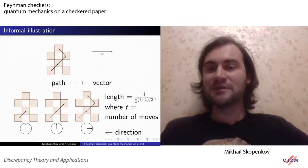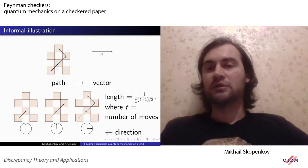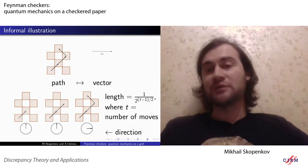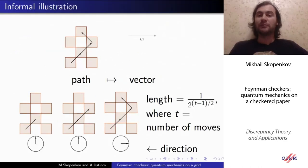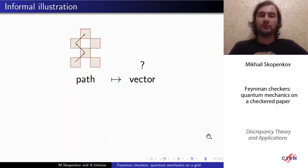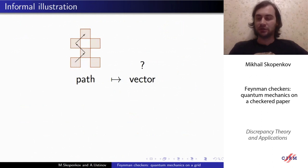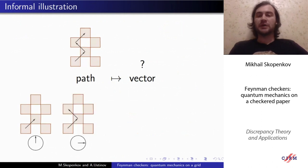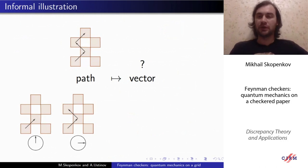So finally, the vector assigned to the initial path is directed to the right and has length one half. To make the definition clear, let us briefly compute the vector for another path. We take the following path and quickly compute the resulting vector. We start with the stopwatch hand looking upwards. It does not change direction after the first move. But the second move is in another direction — the checker makes a turn.